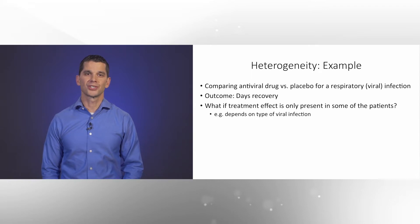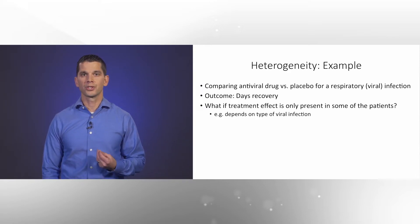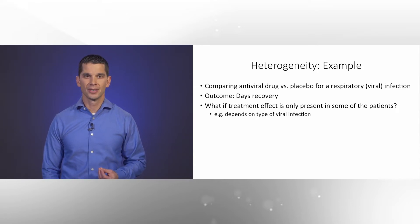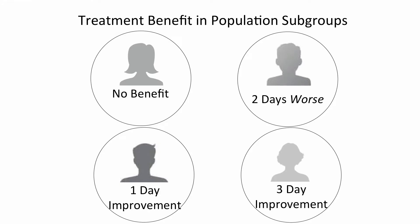For example, suppose we have a single antiviral drug and we want to compare it to placebo for a respiratory viral infection, with an outcome of days to recovery. What if the treatment effect is only present in some patients — in other words, it depends on the type of viral infection. Shown here are four different types of patients corresponding to four different types of viruses. We may have no benefit in some patients, a three-day benefit in others, or patients who actually do worse with this new therapy due to some sort of anti-effect of this antiviral.